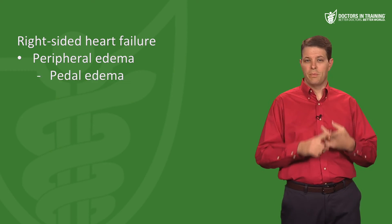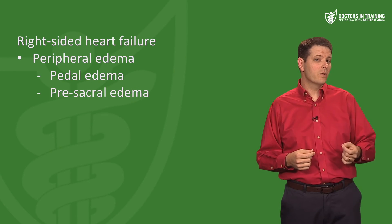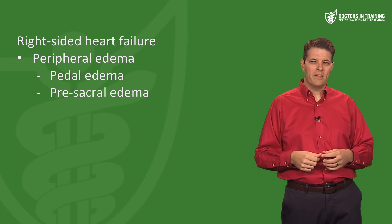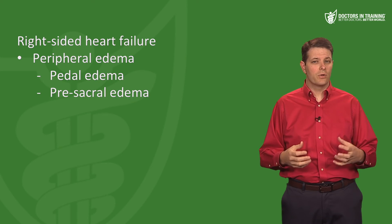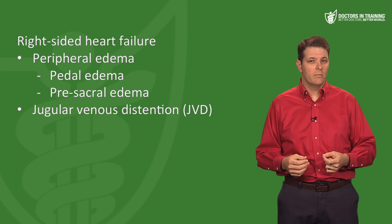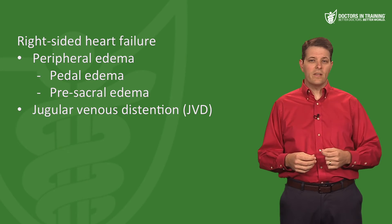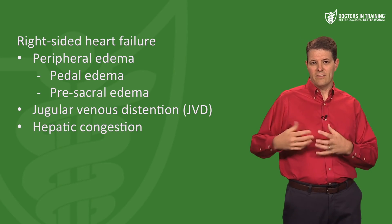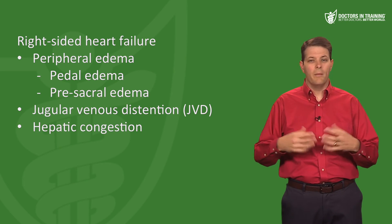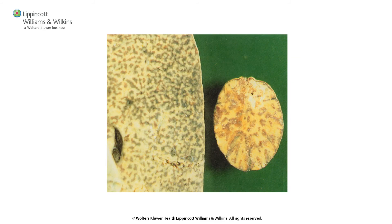Right-sided heart failure causes peripheral edema — pedal edema in the ankles and legs, and pre-sacral edema where pressing on the skin overlying the sacrum leaves a thumbprint due to pitting edema. Increased venous pressure causes more back pressure on capillaries and fluid leakage into the interstitium. You can also see jugular venous distension due to increased central venous pressure.